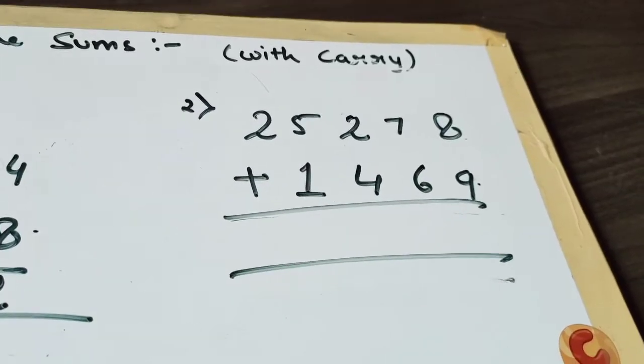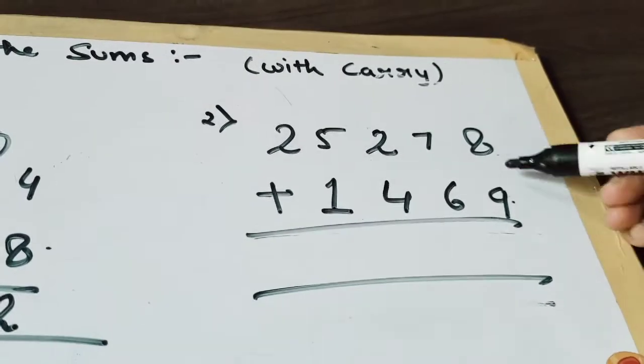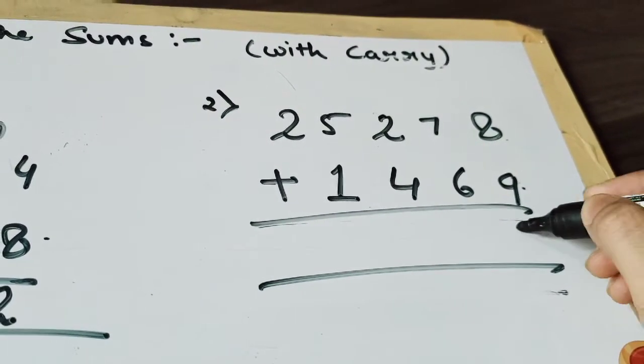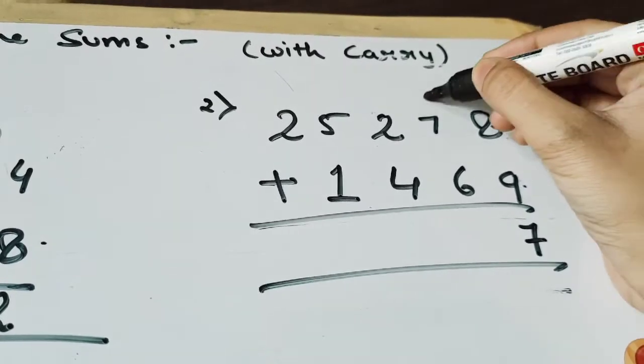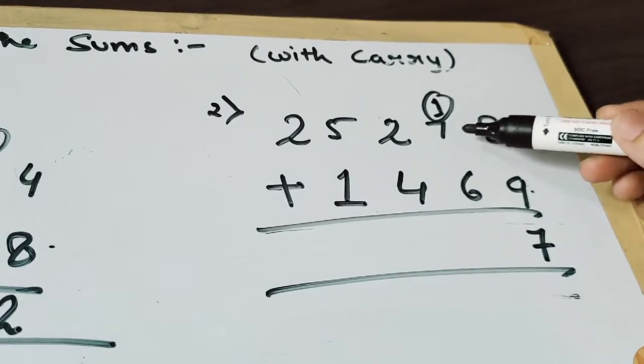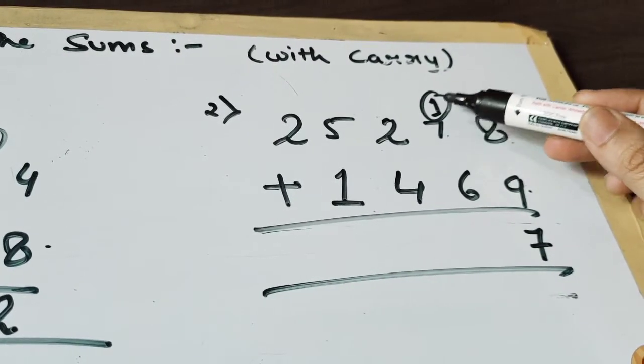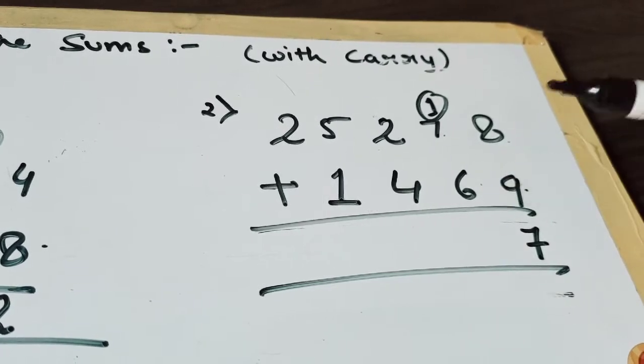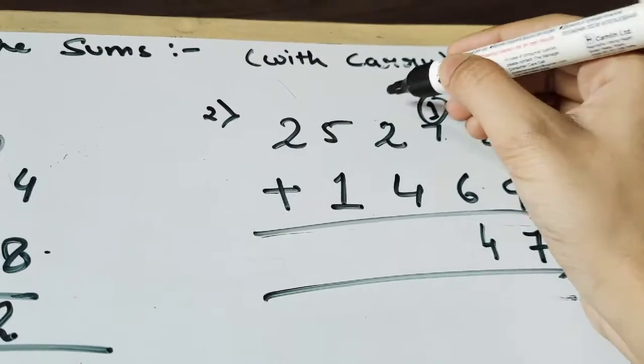Coming to the next question. 8 plus 9 is 17. So write 7 and carry 1. Now 7 plus 1 is 8. 8 plus 6 is 14. Carry 1.